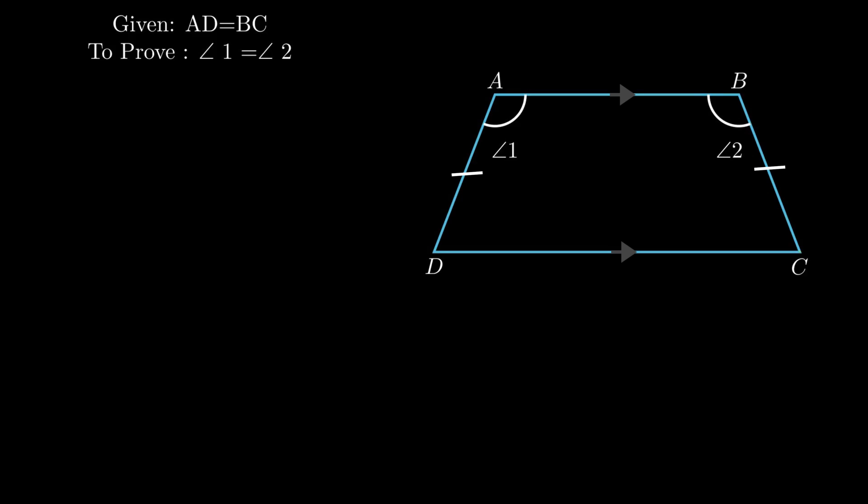From the figure, angle 1 is formed on transversal AD whereas angle 2 is formed on transversal BC, so there does not exist any direct relationship between angle A and angle B. To establish the relationship, there is a need of construction. Draw a line CE parallel to side AD and extend side AB till it meets point E.